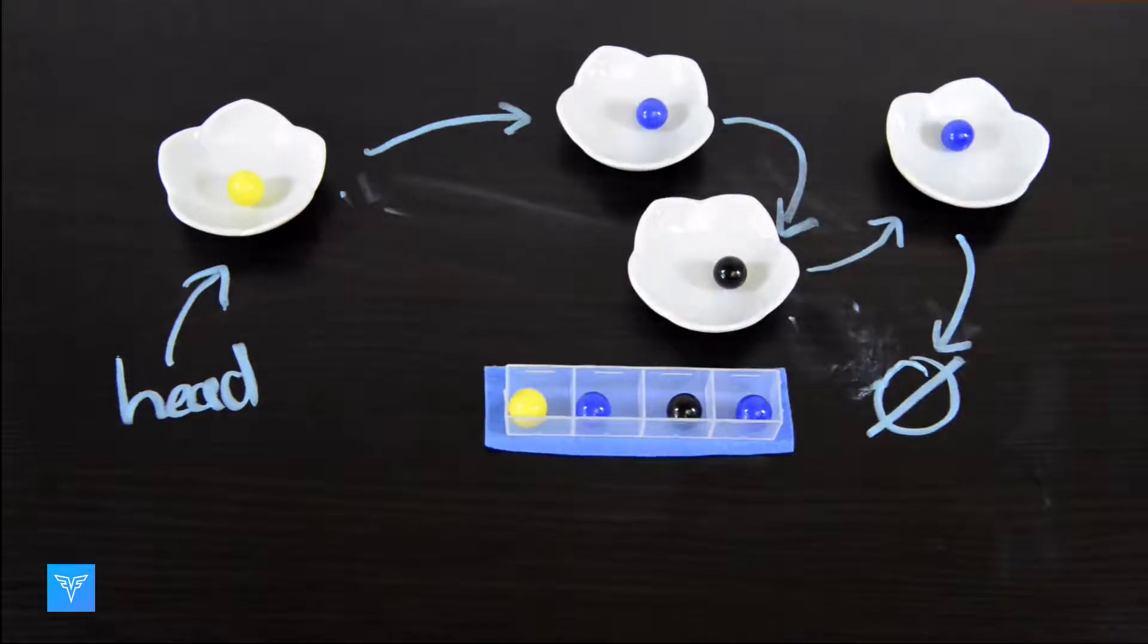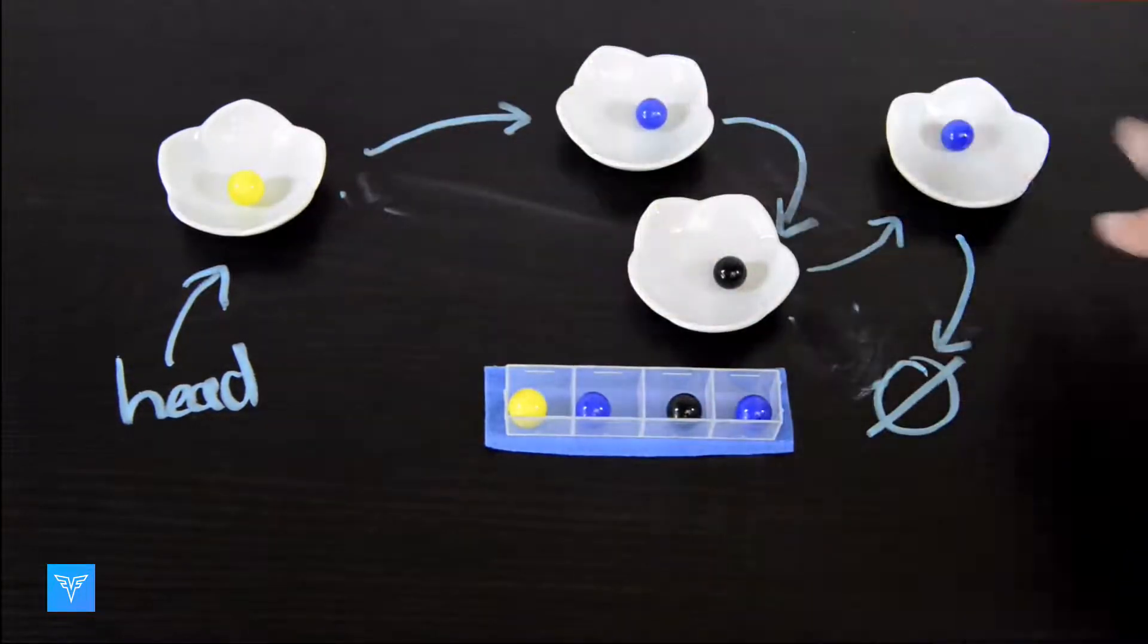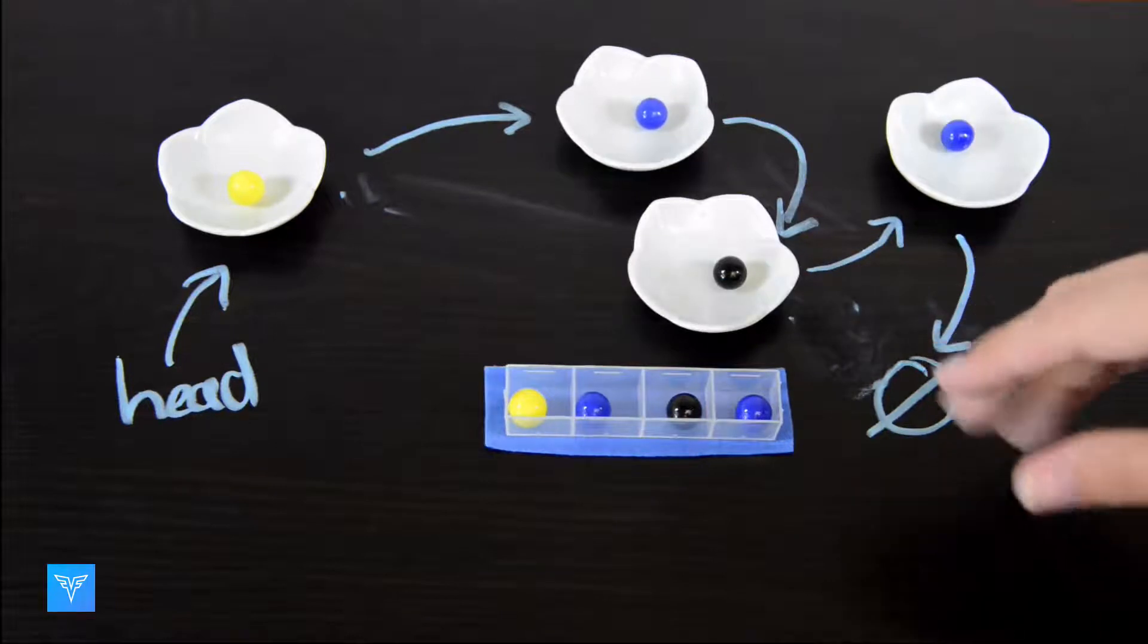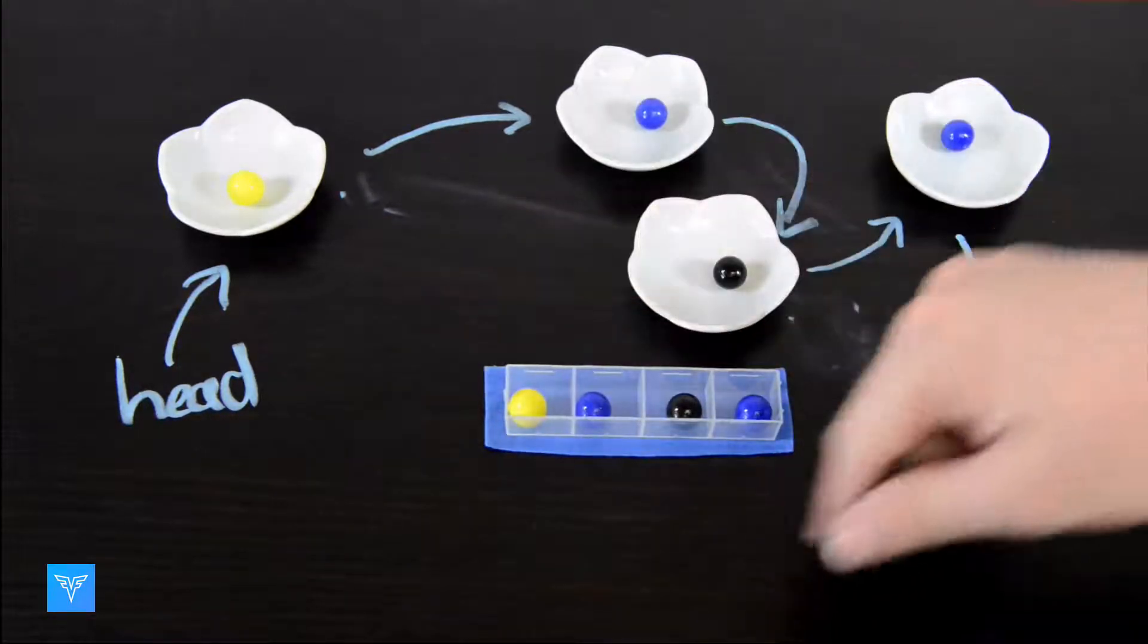With our linked list, we can scatter the nodes across the computer's memory. Whereas for an array, we have to find enough space to fit the entire array. We can't split it up.